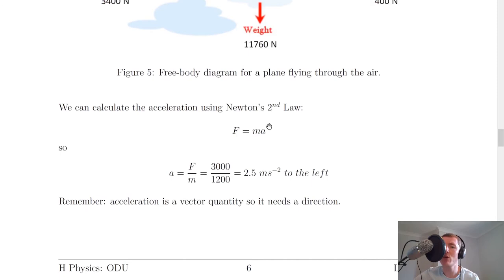And we can calculate this acceleration using Newton's second law. So we have f equals ma, so if we rearrange this for a we get a equals f over m, and then we put in our unbalanced force of 3,000 divided by the mass of 1,200 kilograms from the question, and if you put that into our calculator you should get 2.5 meters per second squared to the left. So remember acceleration is a vector quantity, so it needs a direction of to the left in this case.